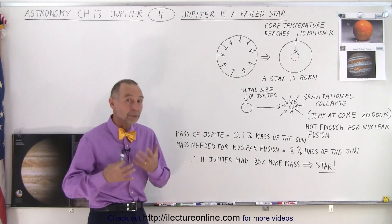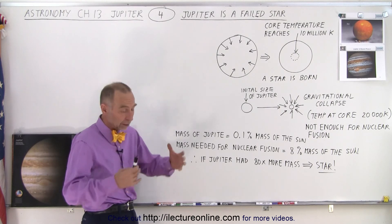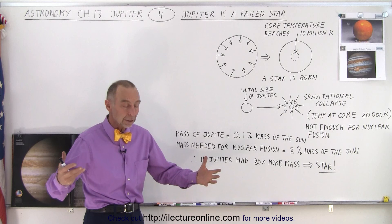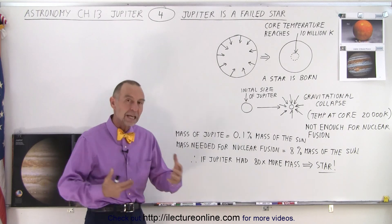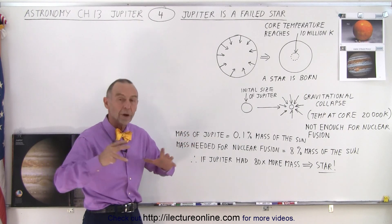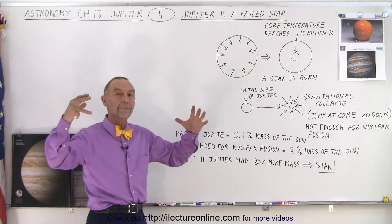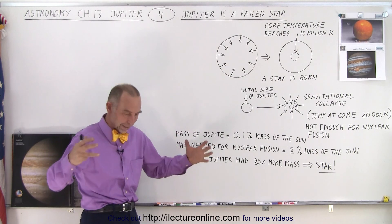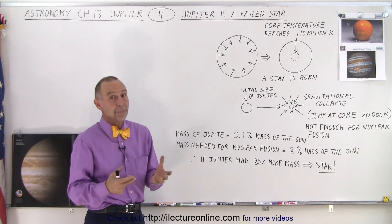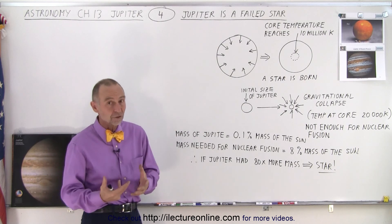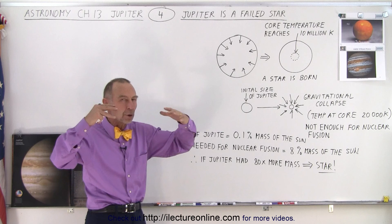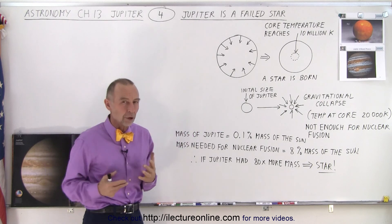How does a star become a star? Well it grows out of a big nebula because of gravitational interaction and some other events. Once the masses of gas and dust begin to collapse gravitationally there really is no stopping it, and that will continue over millions of years and eventually form what we call a protostar.